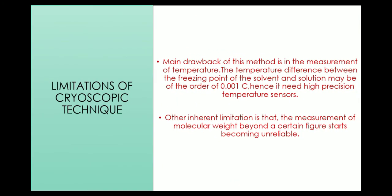There are some drawbacks of the cryoscopic method. The main drawback is in the measurement of temperature. The temperature difference delta Tf between the freezing point of the solvent and solution may be in the order of 0.001 degrees Celsius. Hence, it needs high-precision temperature sensors to measure it accurately. With the advent of thermistors and high-amplification sophisticated electronic devices, the temperature measurement becomes more accurate, and temperature changes as small as 0.0001 degrees Celsius can now be measured with high precision.